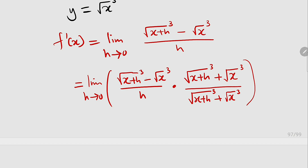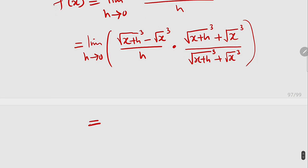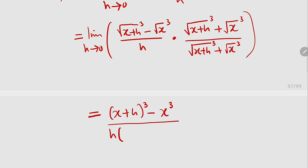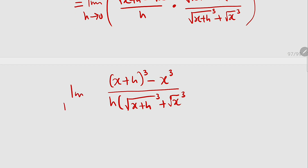From the top, we have a difference of two squares, because they have only a difference of sign, which is plus or minus. So we take the first term and square it, and subtract the square of the second term. That power of 2 will eliminate the square root, leaving only x plus h to the power of 3, then minus x to the power of 3. Then divide by h multiplied by the whole of this, which is square root of x plus h to the power of 3 plus square root of x to the power of 3. Remember, we have our limit as h approaches 0.